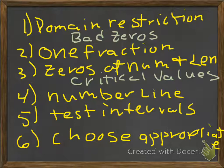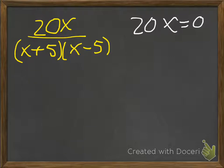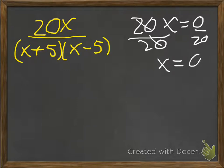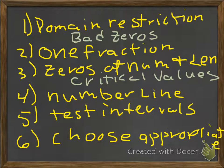Now we want to get zeros of the numerator and zeros of the denominator — those are going to be our critical values. I ask the numerator: 20x equals zero? I divide both sides by 20, and x turns out to be zero. That's my good zero. Now the bad zeros happen when the denominator is equal to zero. We have x plus 5 times x minus 5 equals zero, which happens when x is equal to plus and minus 5. Those were your domain restrictions earlier and those are your bad zeros. Now we put them on a number line.